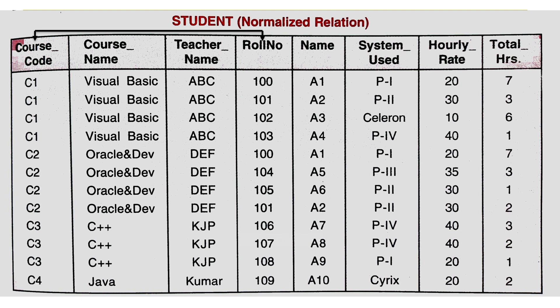In second normal form, the relation should be in first normal form and every non-key attribute should be fully functional dependent on the primary key. This table is already in first normal form because for every row-column combination we have only a single value, so the first condition is satisfied. Now let us check the second condition. To apply second normal form, the first step is to prepare a functional dependence diagram.